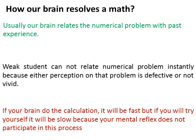Here I want to point out a universal fact: whenever our brain faces a question, it tries to relate the problem with past experience. This happens with everyone. If your brain is able to relate clearly with past experience, it solves the problem very fast or guides you the proper way to get the answer. But if your brain doesn't have any vivid picture related to that question, confusion starts.